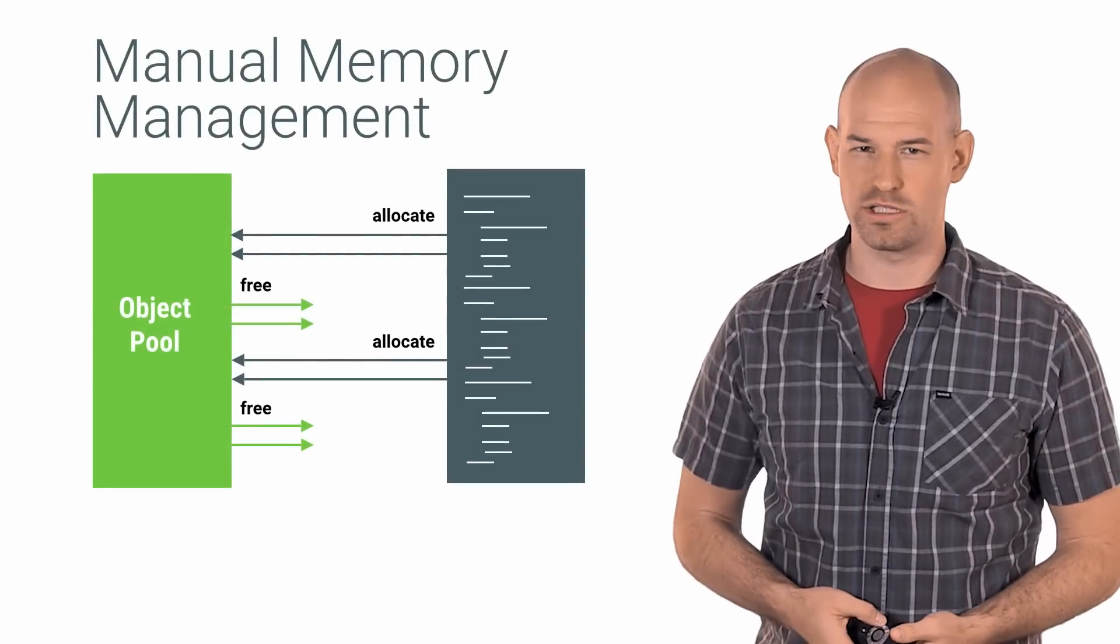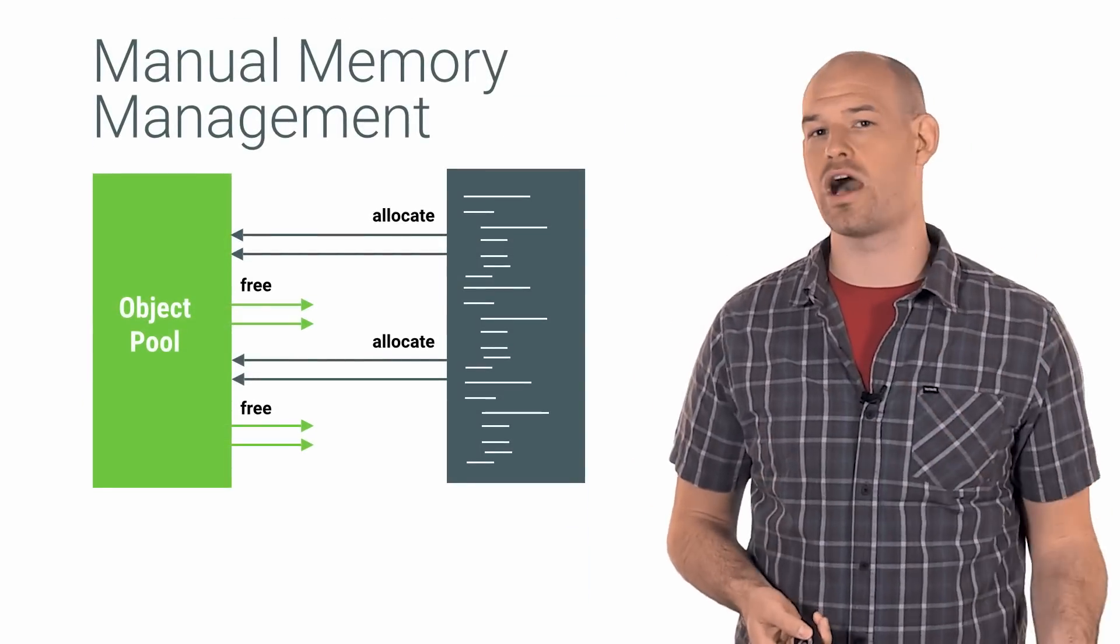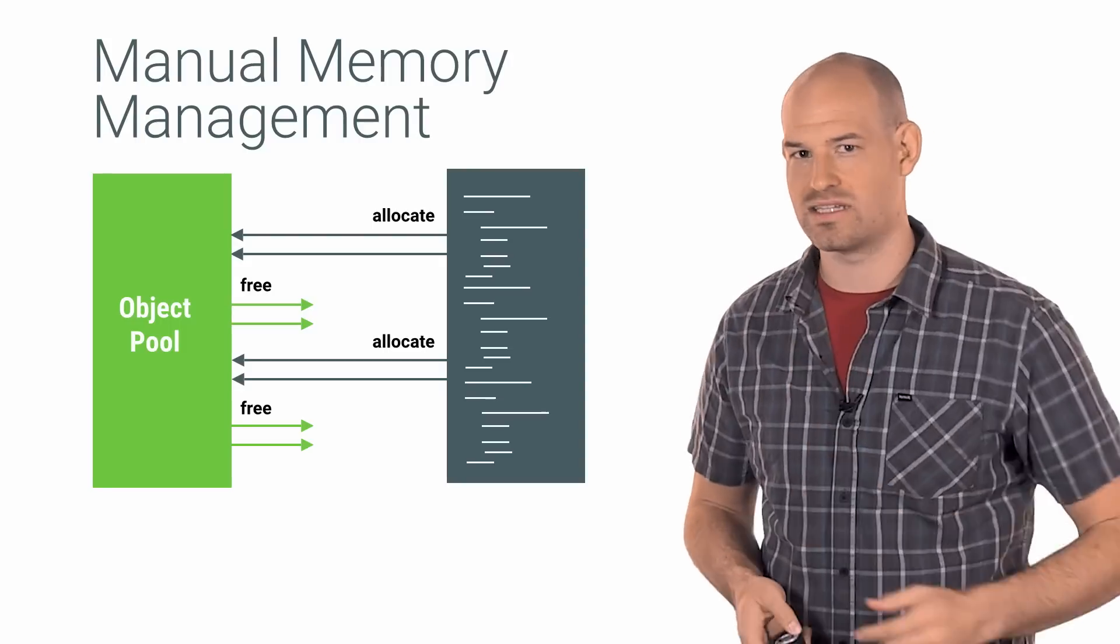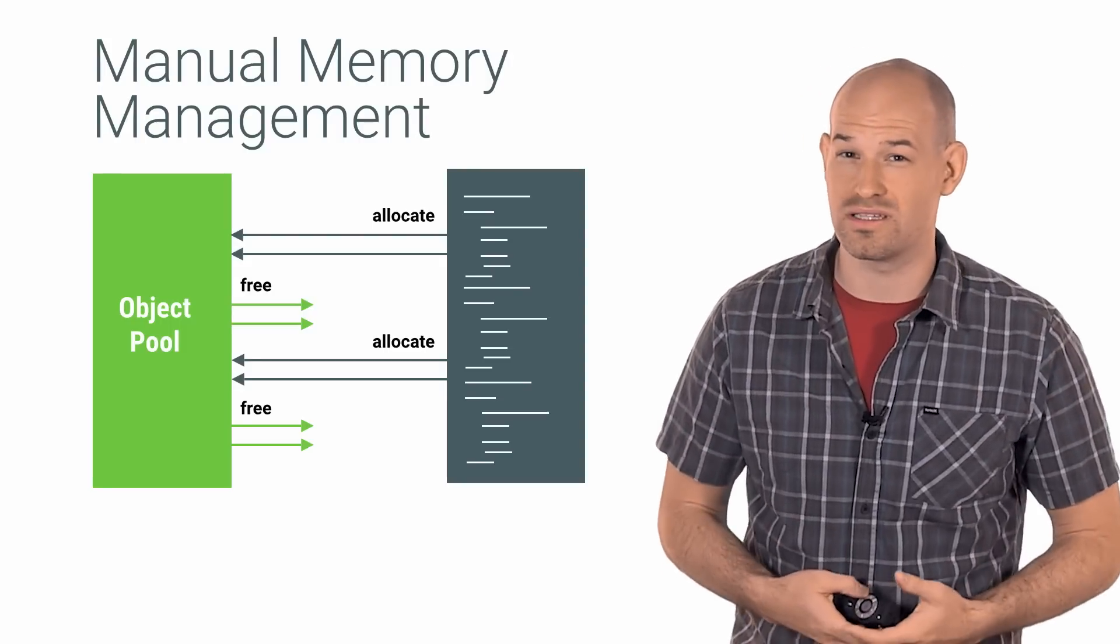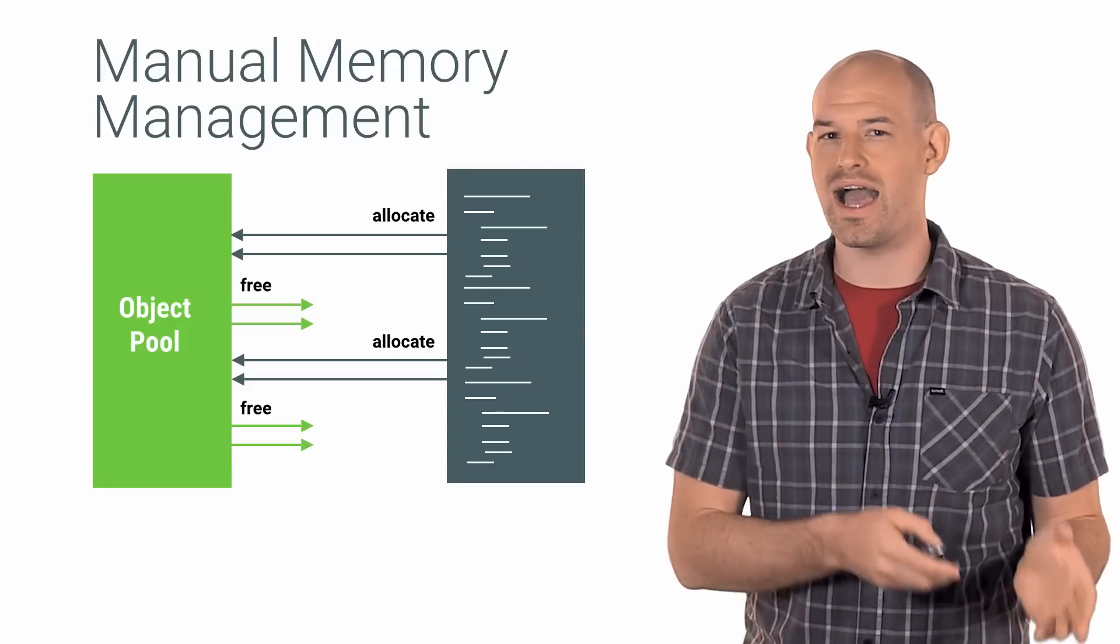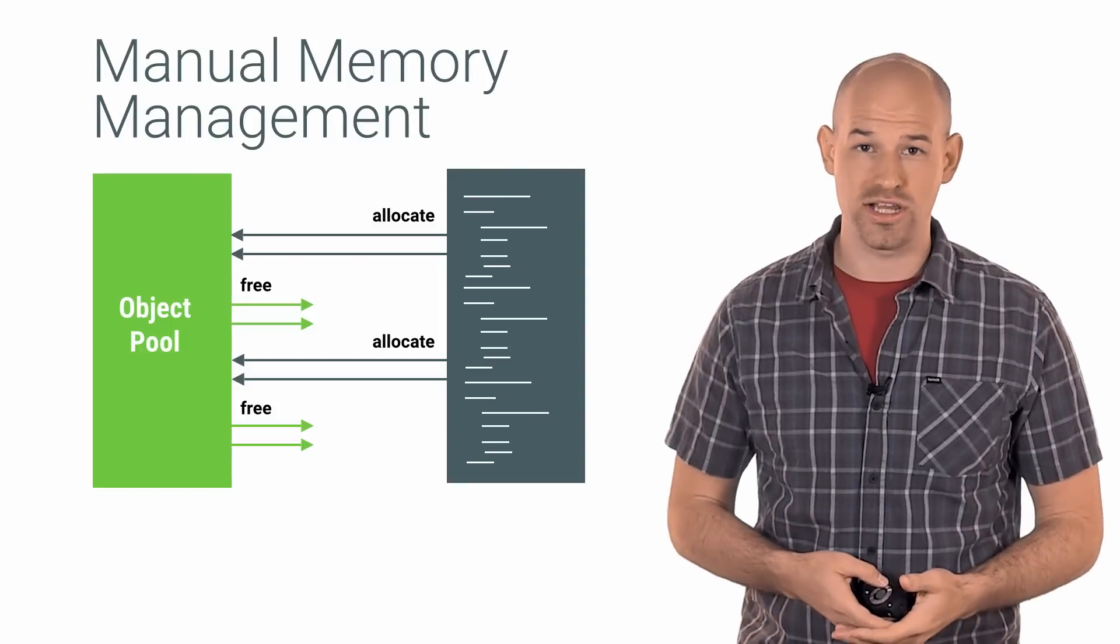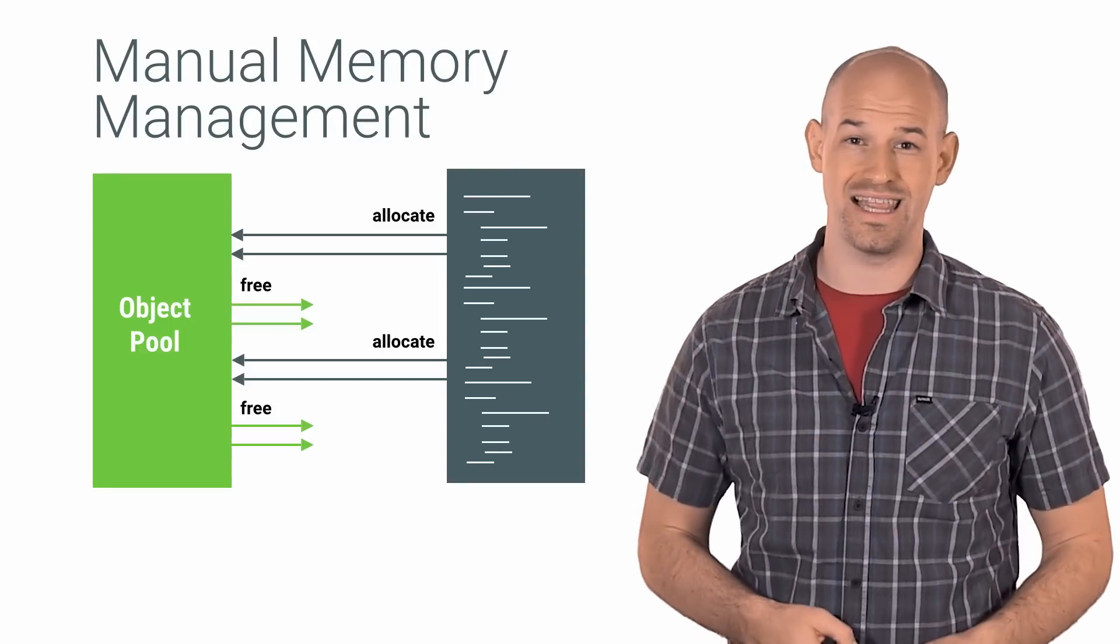However, one of the downsides of object pools is that now you, the programmer, are responsible for allocating and freeing objects manually back to the object pool, which is a pattern that very much resembles non-garbage collected languages. So you might want to limit the usage of object pools to high churn object sets that demand this level of interaction. Otherwise, you'd be wasting a lot of features of the Java garbage collected language.